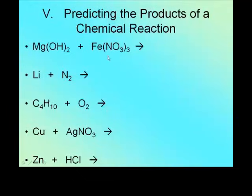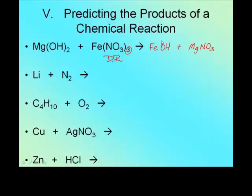Now that you have your answers, let's figure them out. The first one is double replacement, so magnesium and iron are going to switch. In this case I don't have to guess at the charge on Fe because I see the three, so I know it's Fe³⁺. I get Fe(OH)₃ and Mg(NO₃)₂. Fe has a plus-three charge, hydroxide is minus one — Fe(OH)₃. Mg is plus two, nitrate is minus one — Mg(NO₃)₂.